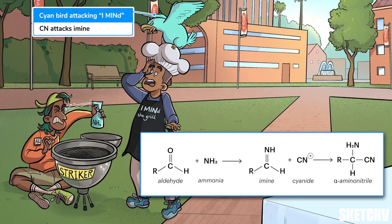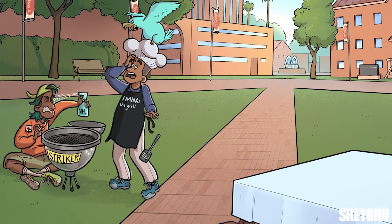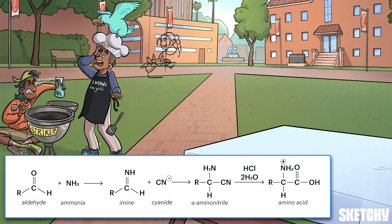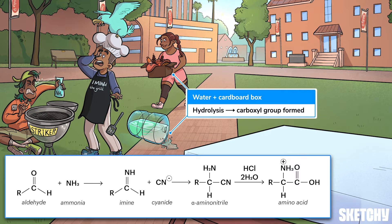This cyanide attack creates an alpha-amino nitrile. The important thing is that this molecule consists of a chiral carbon atom bound to the amino group from the ammonia attack, the new cyano (CN) group, a hydrogen, and the initial aldehyde's R group. That means this intermediate already resembles an amino acid, except there's a cyano group where we need a carboxyl. So in the last step of the Strecker synthesis, that alpha-amino nitrile is hydrolyzed, which ultimately leads the nitrogen of the cyano group to be replaced by two oxygens and a hydrogen, forming a carboxyl group.